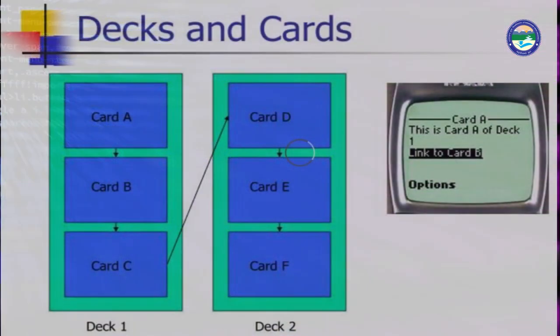Each subsection of the code is called a card, and the collection of different cards is called a WML deck. These two terms — deck and cards — are important. You can see on this slide the different cards shown in blue, and the combination of three cards is deck 1, and another three cards is deck 2. Each deck has three cards and each card contains a piece of code.